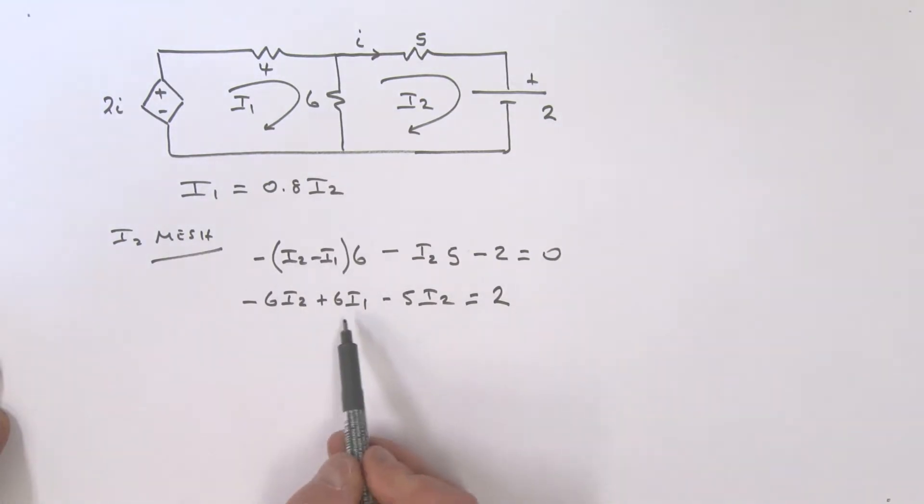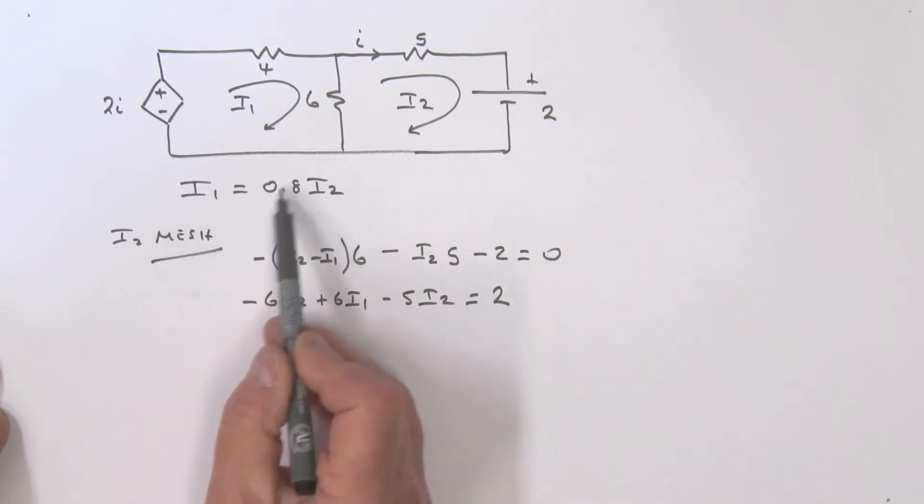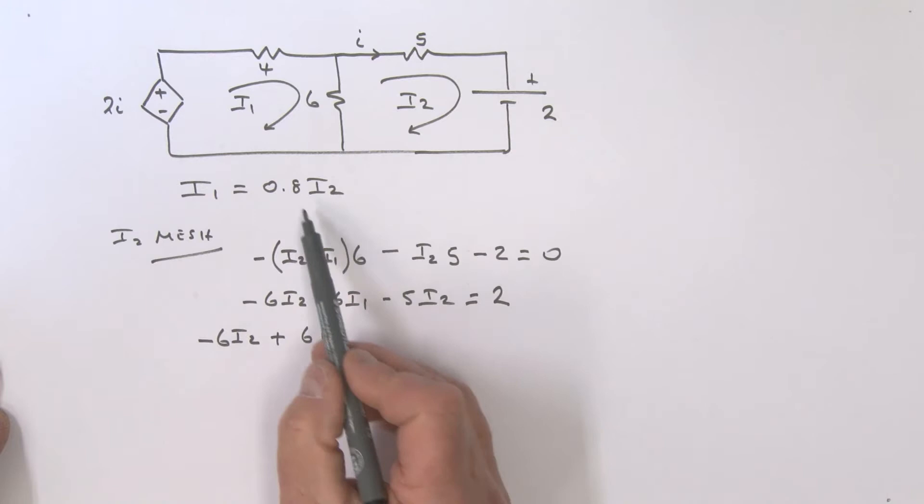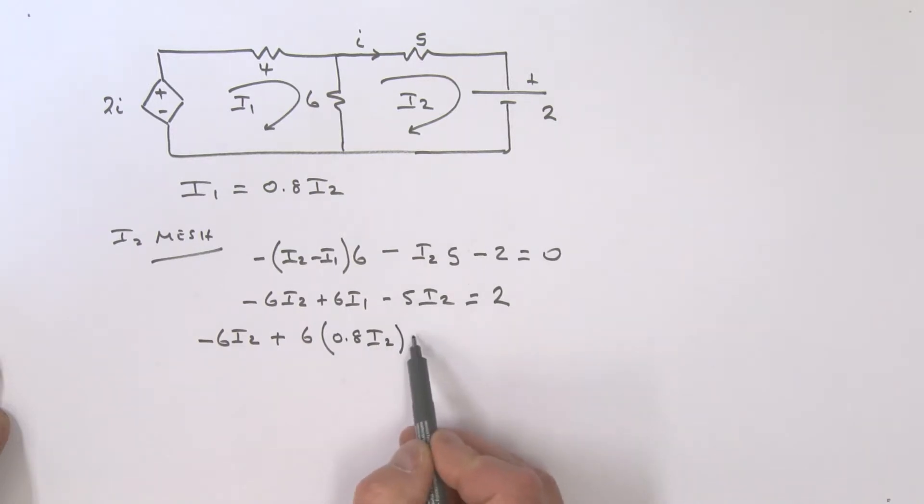We have found an expression for I1 in terms of I2, so we could substitute in here. We've got a minus 6 I2, and then we've got a plus 6 bracket, this is my I1 which is 0.8 I2, and then I've got my minus 5 I2, all of that is equal to 2.